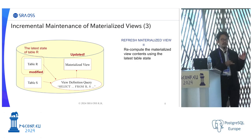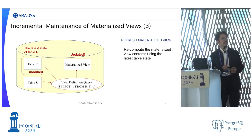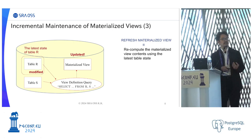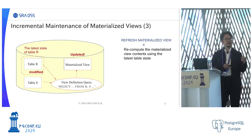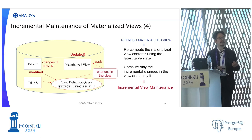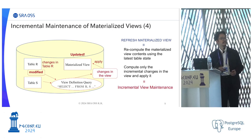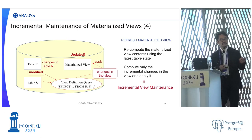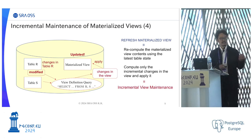PostgreSQL has a REFRESH MATERIALIZED VIEW command. It can update the view contents by executing the query again, which means it recomputes the view's contents from the latest table state. But it takes a long time because we need to execute the query again. On the other hand, incremental view maintenance computes only the incremental changes from the changes that occurred in the table, using the view definition and the other tables, and by just applying these changes to the view, we can get the up-to-date view state.